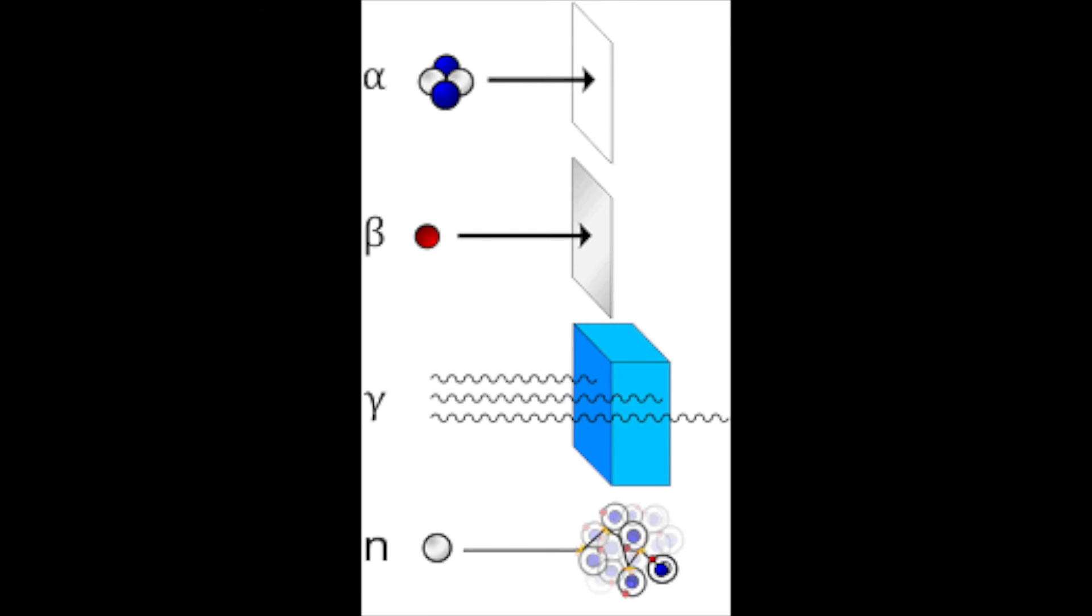And because a beta particle is an electron it can turn a neutron into a proton in the nucleus.